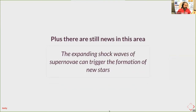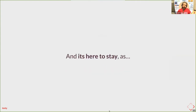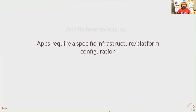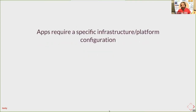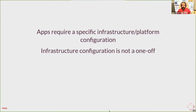Supernovas can trigger the creation of new stars, and those stars can eventually become supernovas too. The same probably applies to infrastructure as code — there are still new tools, new things arriving, patterns that are evolving. I think it's worth monitoring this problem space. I strongly believe these tools are going to be with us for a long while, because services and applications require specific infrastructure or platform configuration. I tend to consider infrastructure as dynamic — if you just consider infrastructure as a one-off thing, this talk is probably not for you.